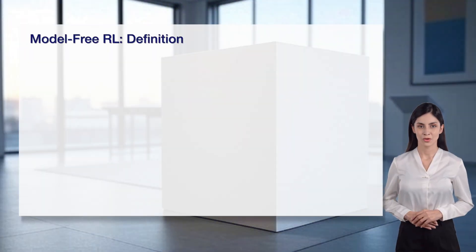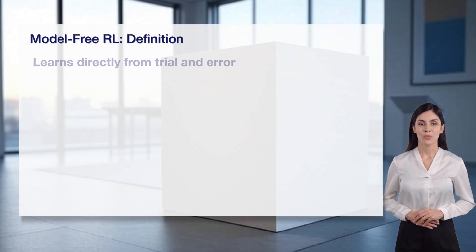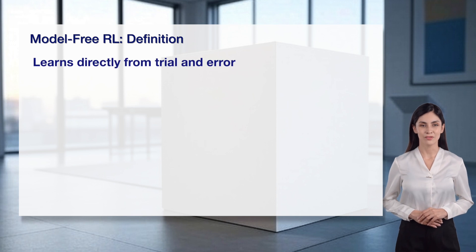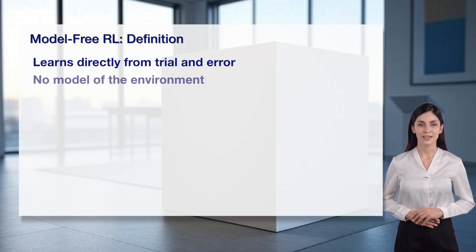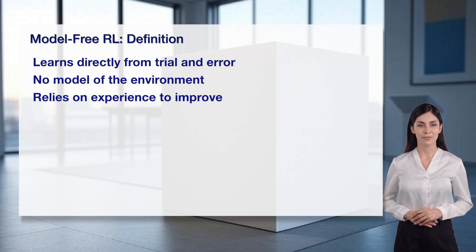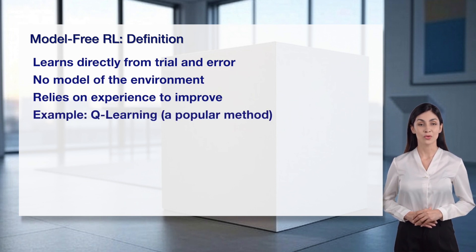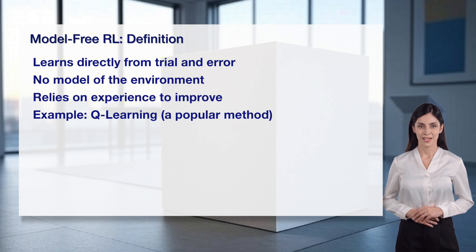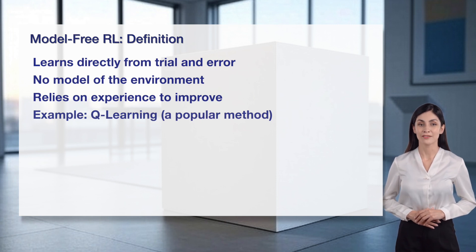Model-free reinforcement learning is an approach where the agent learns directly from trial and error. It doesn't build a model of the environment, so it doesn't predict how the environment will respond. Instead, it relies on experience to improve its actions over time. For example, Q-learning is a popular model-free method used in many applications. This approach is straightforward, but can require a lot of trial and error to learn effectively.